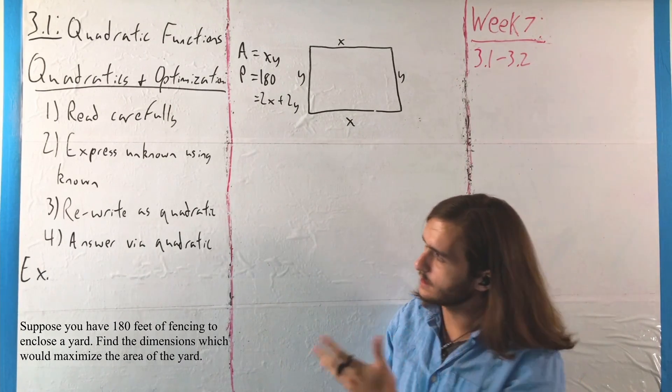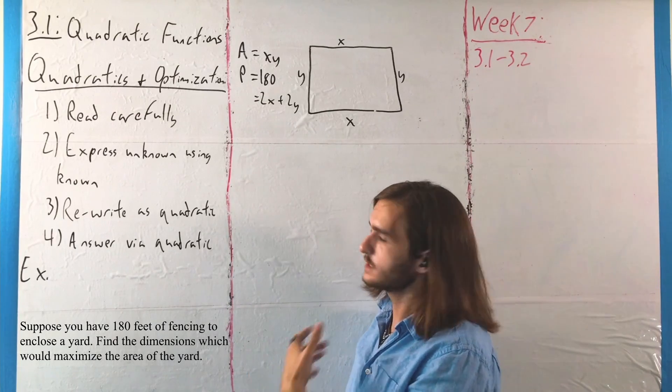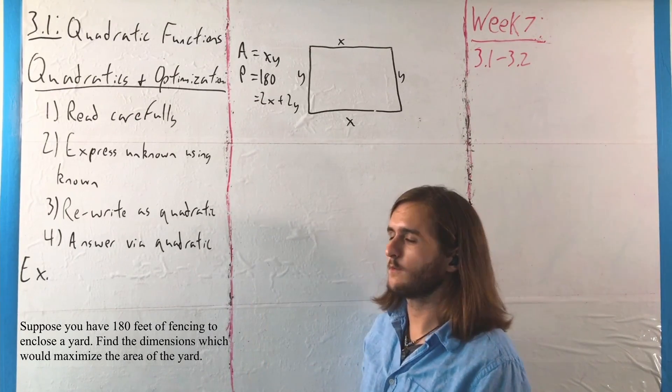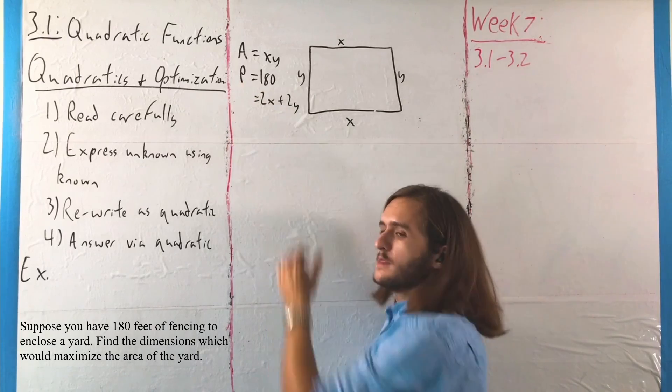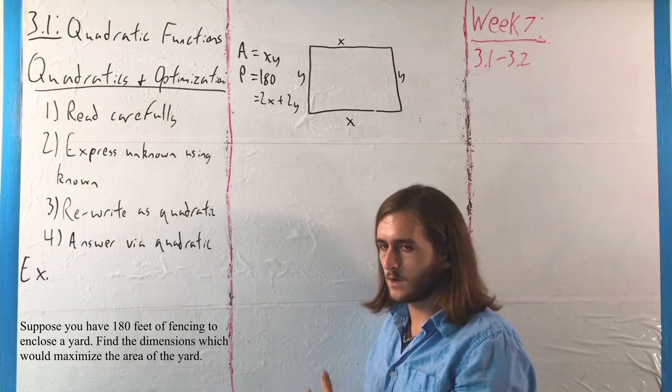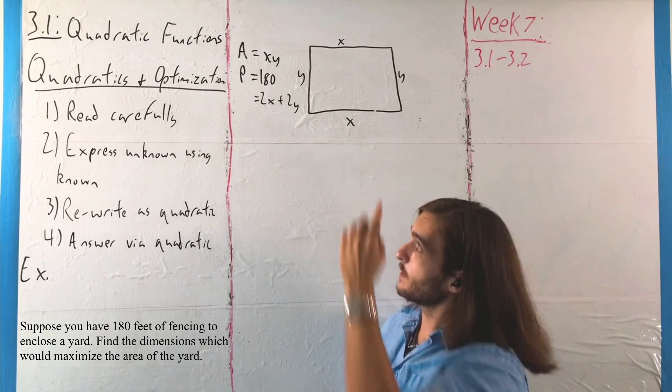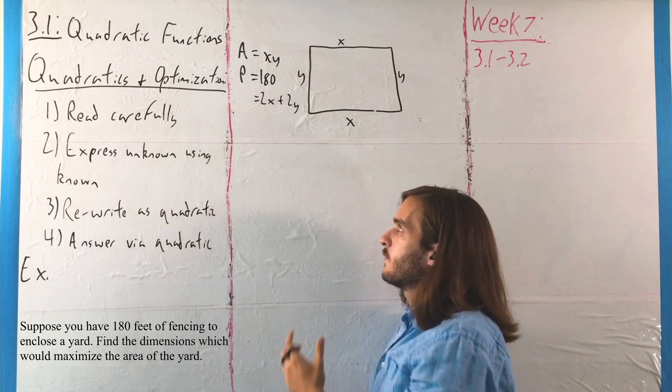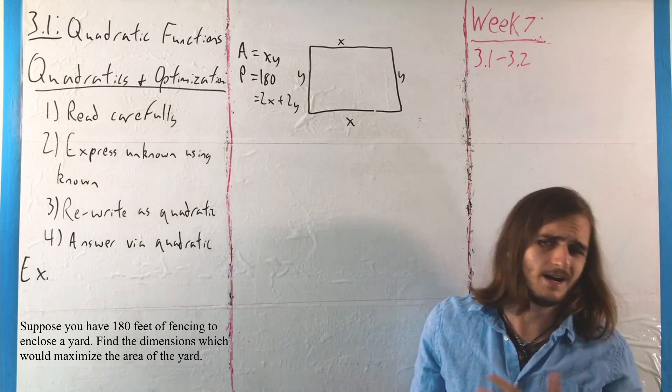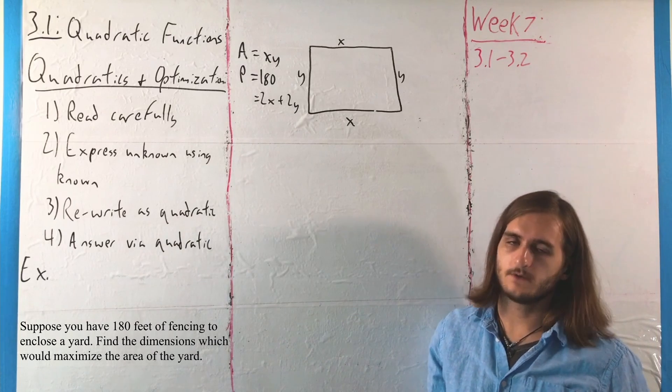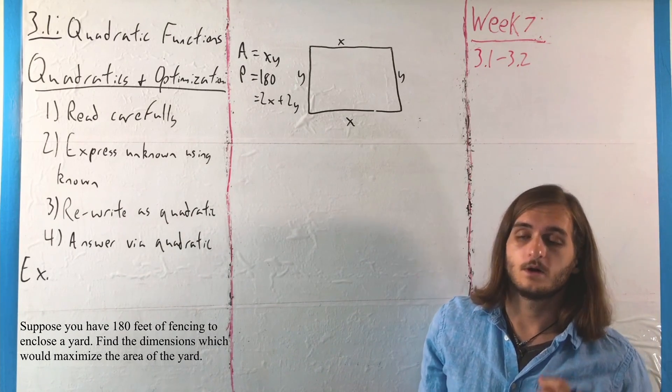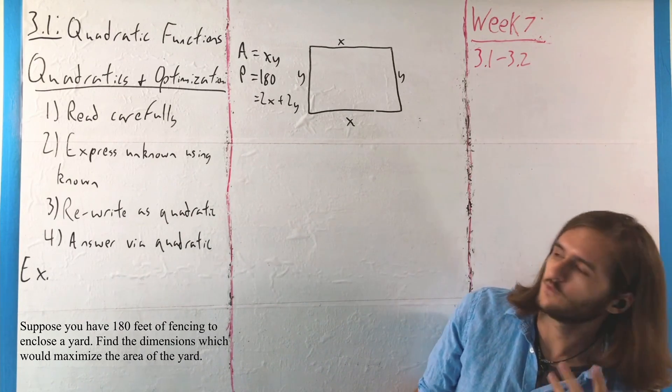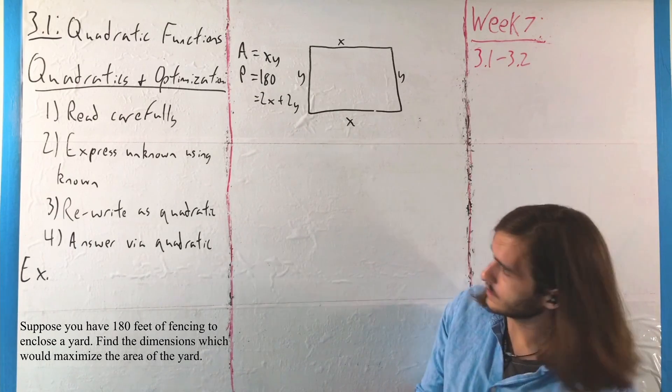And with this, we're then going to be able to get to that second step of expressing something that's unknown using known information, because we can solve that perimeter formula for one of x or y and replace it in there, which is actually going to put it straight into a quadratic form. We can actually solve that either for x or y. I'm going to solve for y here so we can get our quadratic in terms of x, but it really doesn't matter.